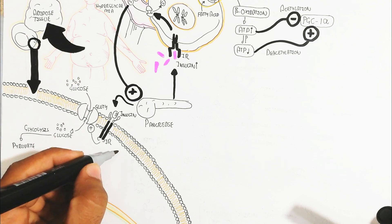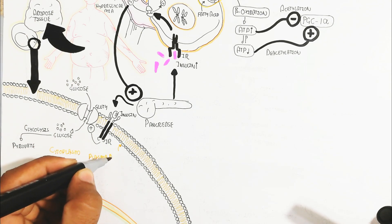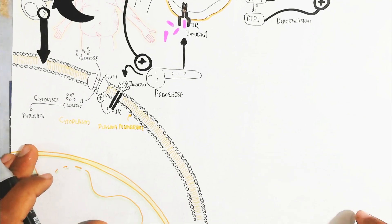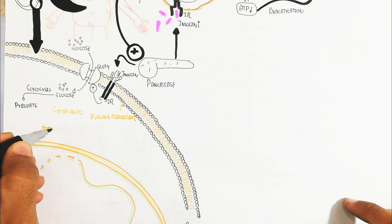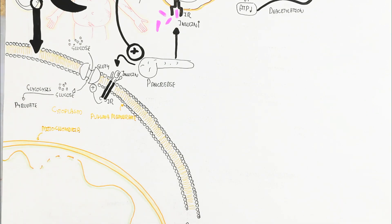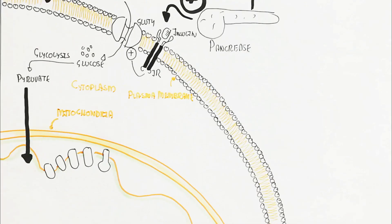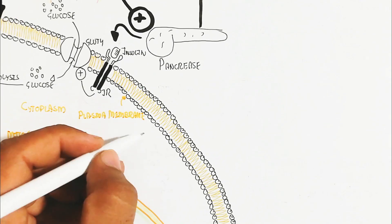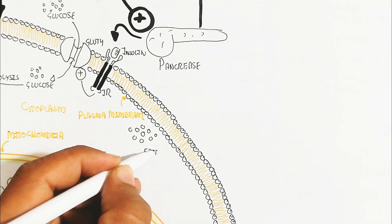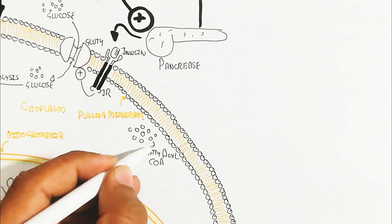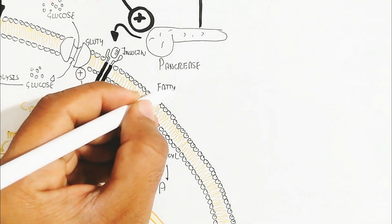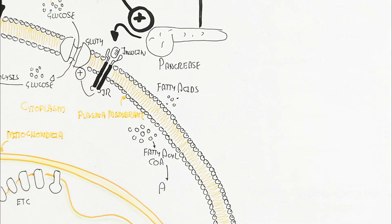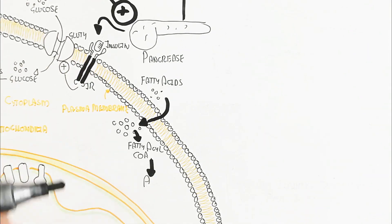Glycolysis leads to the production of pyruvate. This pyruvate enters into the mitochondria — here is the cytoplasm, the plasma membrane, and the mitochondria. When pyruvate enters, it is converted into acetyl-CoA and carbon dioxide is released. This is the electron transport chain. Fatty acids form fatty acetyl-CoA in the cytoplasm to enter the mitochondria.